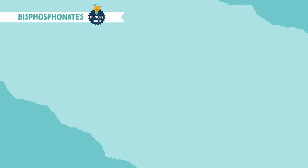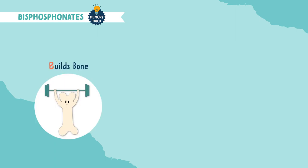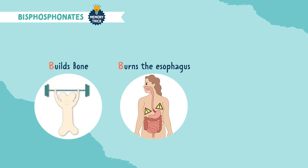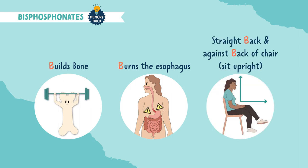A memory trick to remember the key points for bisphosphonates is to think of the Bs. These drugs help build bone. Remember, they burn the esophagus — this is called pill-induced esophagitis. And after taking the medication, the patient should sit with a straight back against the back of a chair at 90 degrees.